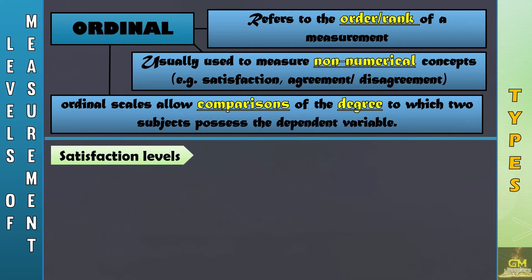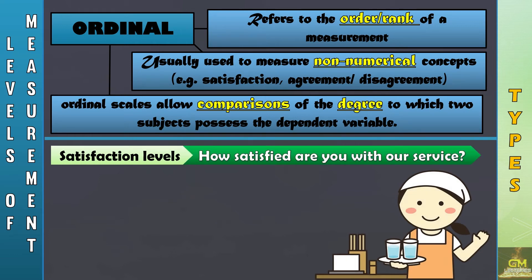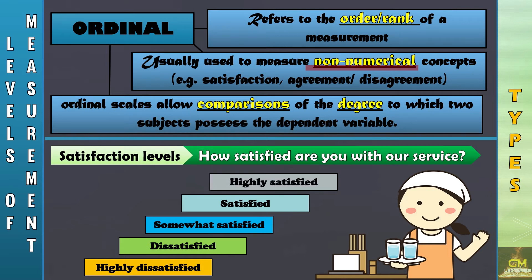Let's have this example on satisfaction levels. The question is: how satisfied are you with our service? Since satisfaction level is considered to be qualitative data, it is considered to be non-numerical. Hence, we cannot technically measure the satisfaction levels of an individual. As such, we have different terms such as highly dissatisfied, dissatisfied, somewhat satisfied, satisfied, and highly satisfied. Take note that each particular term is different in terms of the degree.